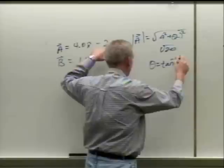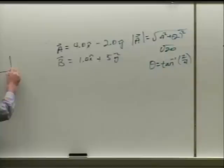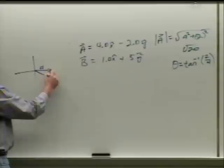The direction uses 2 over 4. You might get a bigger angle, but it's actually in the fourth quadrant — because the vector goes over 4 and down 2.